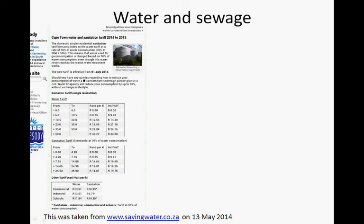70% of 50 kilolitres is 35 kilolitres. This means water used for garden irrigation is charged based on 70% of water consumption, even though this water never reaches the wastewater treatment. The new tariff is effective from the 1st of July 2014. The water tariff: if you use no water up to 6 kilolitres per month, you pay nothing.